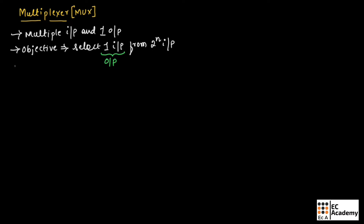The multiplexer has 2 to the power of n inputs, and along with these inputs, it will have n select lines. Based on these n select lines, the multiplexer will produce the output.